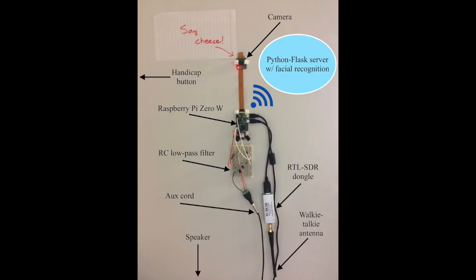After a short delay, the system will capture a photo of the user and send it to a Python Flask server hosted in Amazon Web Services EC2.